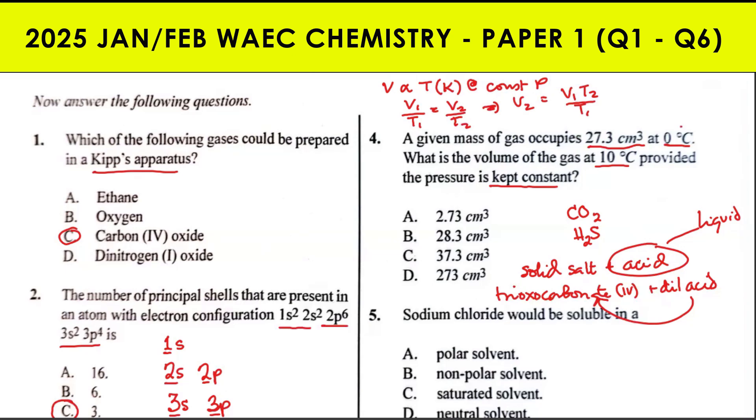Substituting the values, we get V₂ = 27.3 × 283 / 273. If we calculate that, we get 28.3 cm³. Please note that whenever you have a question with gas laws—Boyle's Law, Charles' Law, combined gas equations—always change your temperature to Kelvin, especially with Charles' Law, ideal gas equation, and general gas equation. Otherwise, you will not get the correct answer.